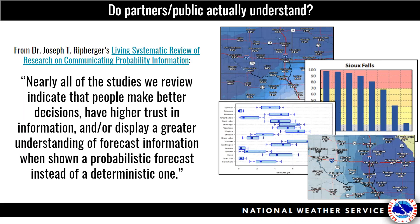People out there might be thinking: probabilistic information is great, but do partners and the public really understand this data? That's a great question. What we do know is that there is a lot of published research. Dr. Joseph Ripberger created a systematic review looking at these publications and asking exactly that question — how do people interpret this data and do they understand it? There's a link to this on the prob messaging Google Sites page. What they found in this repository is that overwhelmingly, probabilistic information increases the trust and understanding of the forecast — it is helping our partners and the public.